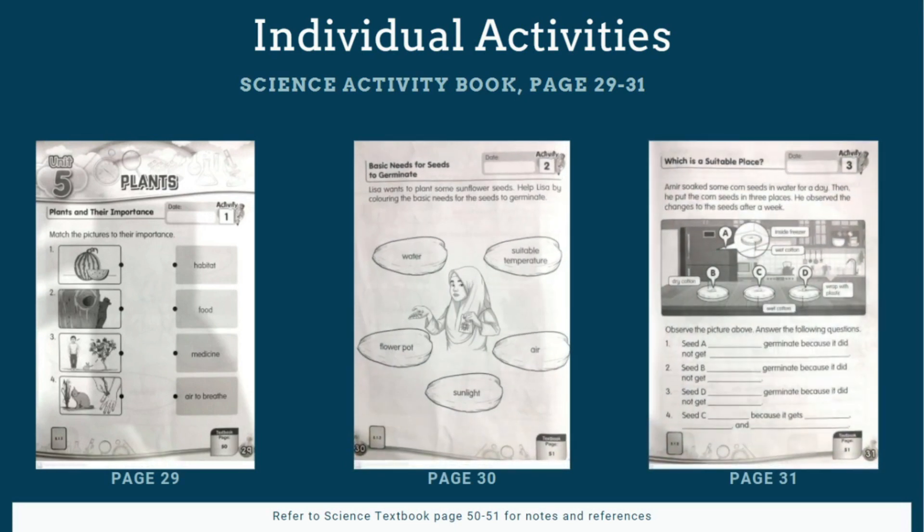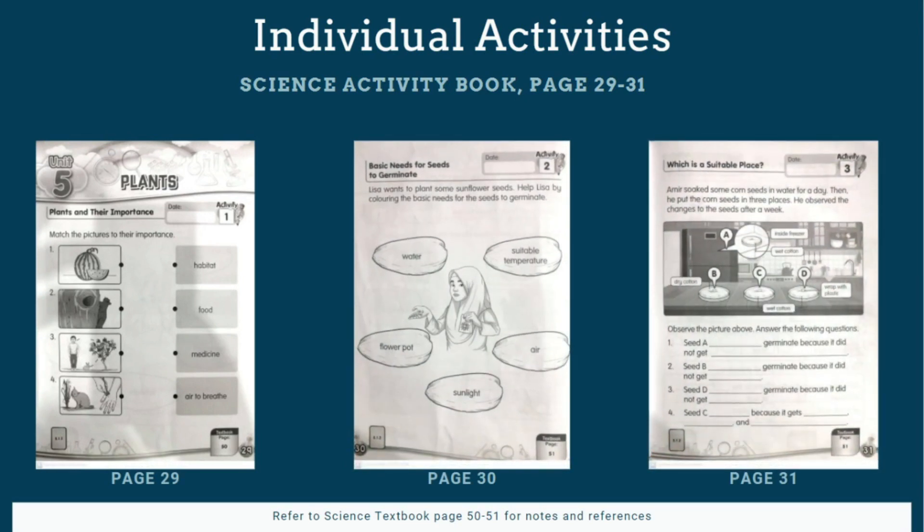I have three activities for you here. I want you to get ready with your science activity book. Refer to page 29 until 31. In page 29, it is very simple for you - you just match the pictures to their importance. On the left are the pictures, on the right are their importance. That one is very simple, straightforward for you. In page 30, you need to help Lisa. The instruction says Lisa wants to plant some sunflower seeds. Help Lisa by coloring the basic needs for the seeds to germinate. So remember there are three basic needs of seeds to germinate.